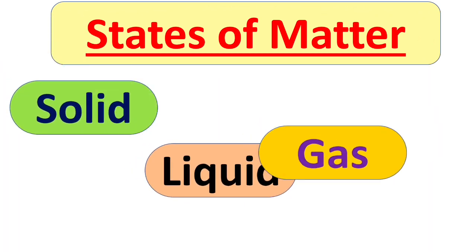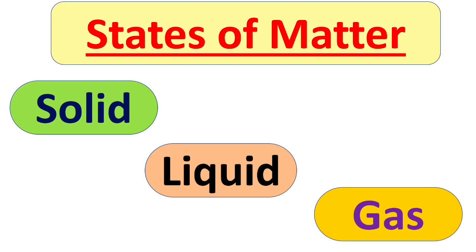Matter can exist in three main states and they are solid, liquid and gas. Let's have a look at them one by one.